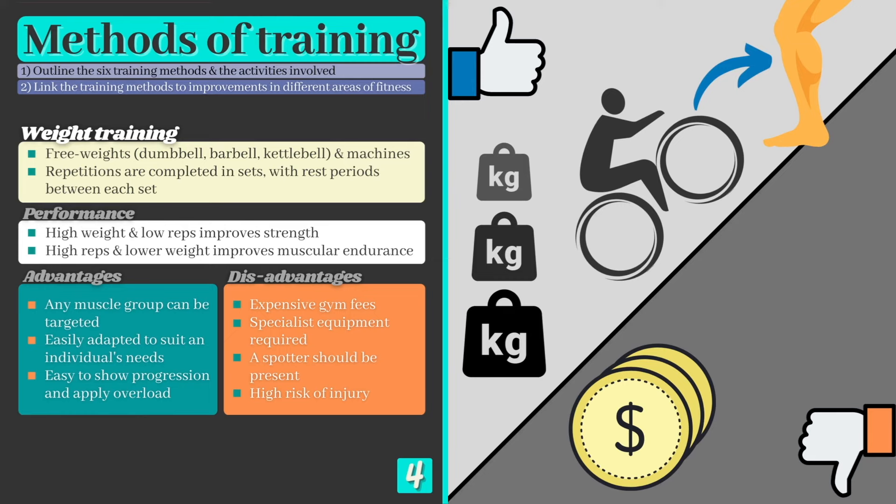Disadvantages: Weight training may not be accessible for all as gym fees can be expensive and specialist equipment may be required. The high levels of stress placed on the muscles also carries a significant injury risk, so you need to make sure you warm up thoroughly and have a spotter present for safety reasons.